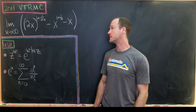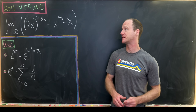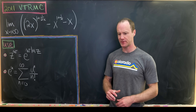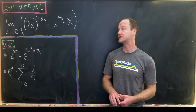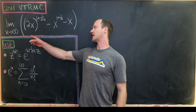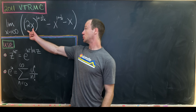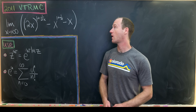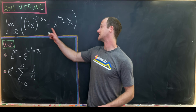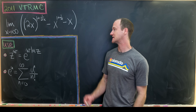Today we have a limit from the 2011 Virginia Tech Regional Math Competition, a math competition for college students in the United States. Our goal is to find the limit as x goes to infinity of 2x to the power 1 plus 1 over 2x, minus x to the power 1 plus 1 over x, minus x.